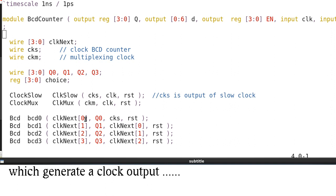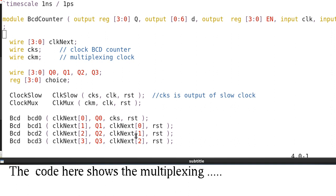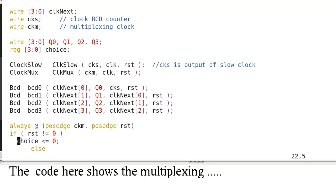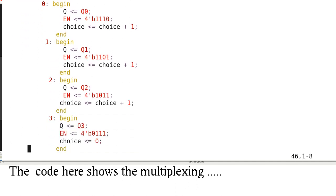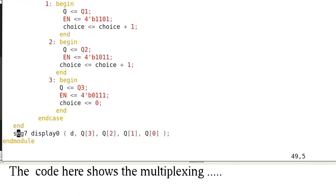Which generates CK next zero, which is the clock input to the next BCD digit, and it generates another clock input to the next stage and the next stage. So this code is quite straightforward. And at the end, it creates an instance of the 7-segment module for display.